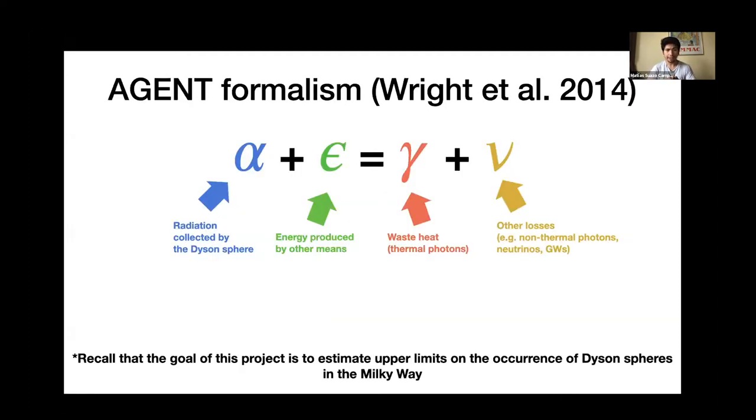Another concept that we have to keep in mind is the agent formalism that was described by Greig et al. 2014. In this paper, it's described this balanced energy equation applied to the alien's energy budget. And it's summarizing this equation. In the left hand side, we have alpha that stands for radiation collected by biosphere. And epsilon that stands for the energy produced by other means. So the left hand side is the collected energy. While in the right hand side, we have the disposal energy. Gamma is the waste heat, while nu or other losses like neutrinos or gravitational waves. So after giving you this bunch of information, I would like to recall again that the goal of this project is to estimate upper limits on the prevalence of Dyson spheres in the Milky Way.